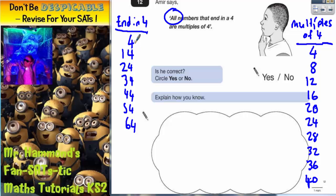If we start at the top, 4 is a multiple of 4. 14—now 14 is not in our multiples of 4 list. So straight away we found an example that proves that he is not correct. So the answer is no.